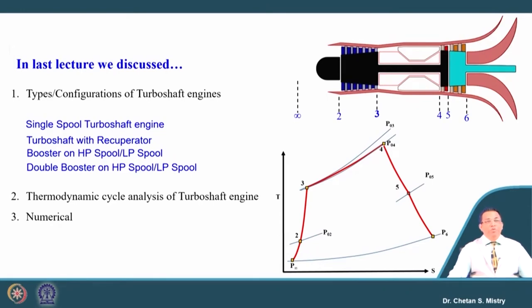Now let us move towards the next approach. Before going into the next approach, we must recall that we discussed the turbojet engine — single spool configuration — then two spool engine, then the operation and non-operation of the afterburner for the turbojet engine. Then we discussed eight different configurations for the turbofan engine, then configurations related to the turboprop engine.